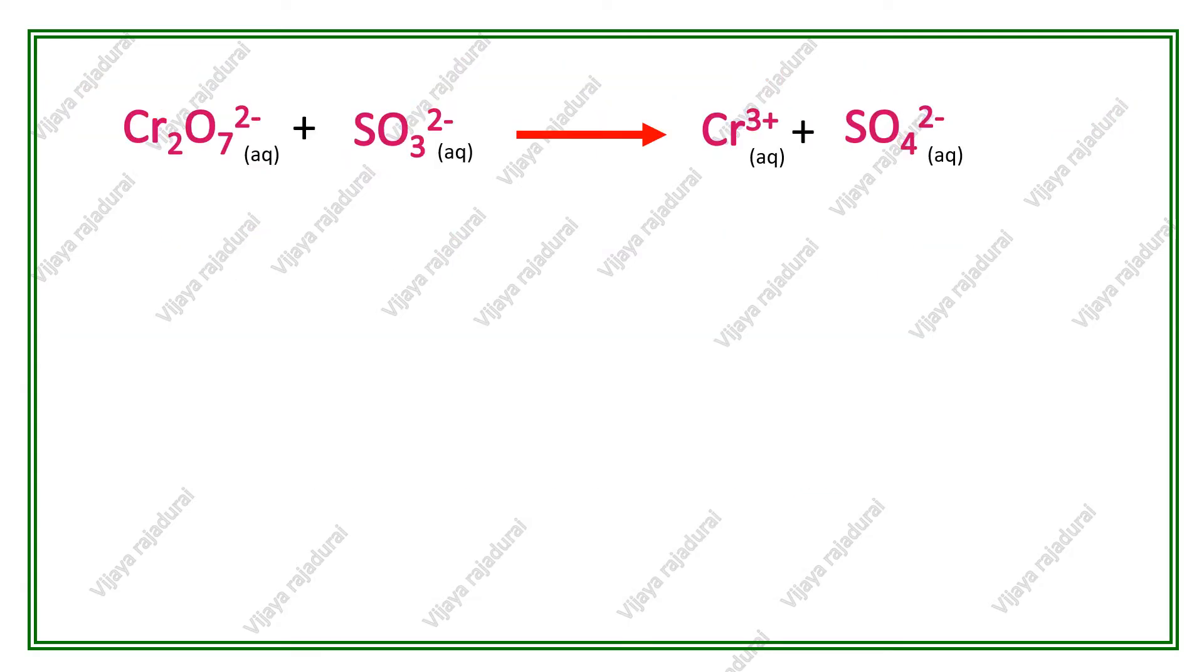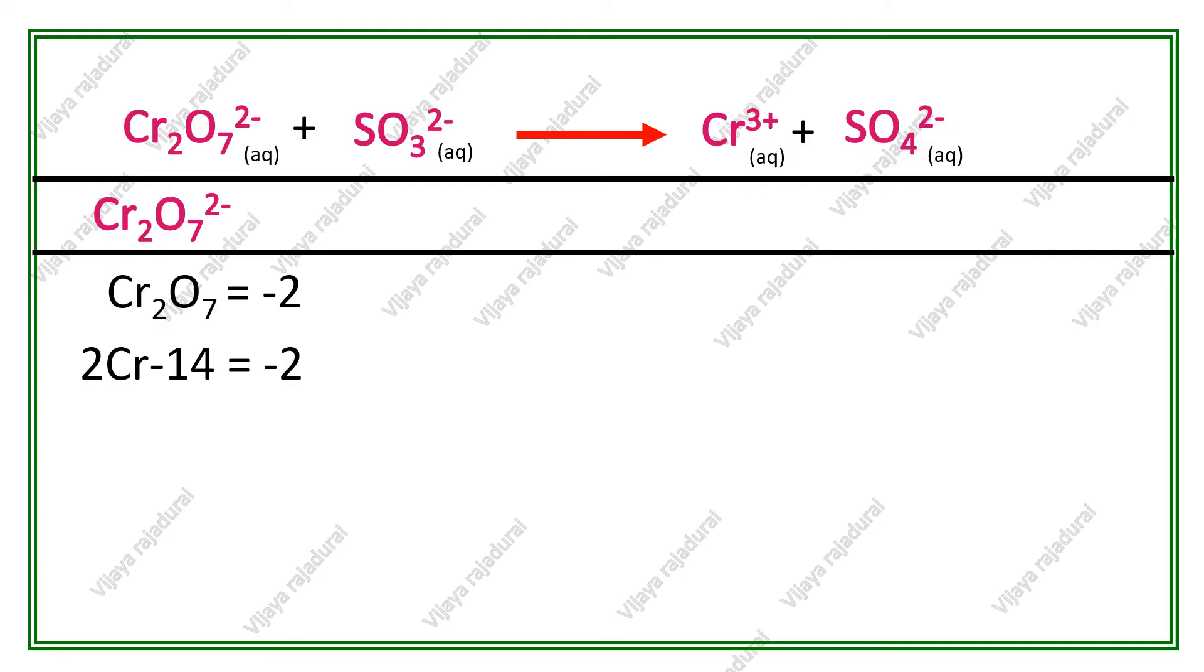Next step, we calculate the oxidation number on reactants and products molecules. Now we calculate the oxidation number in dichromate.